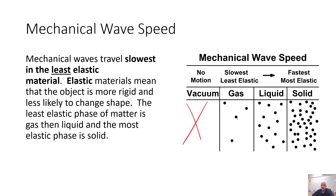We go from a vacuum where there's no motion to gas, liquid, and solid — from least elastic to most elastic. Gas is very moldable, liquid is moldable but less so, and solid is more rigid. With mechanical waves, they travel fastest in a solid because the particles can bounce off each other very quickly. They travel slower in liquid, even slower in gas, and cannot travel at all in a vacuum. So: slowest in gas and fastest in solid for a mechanical wave.